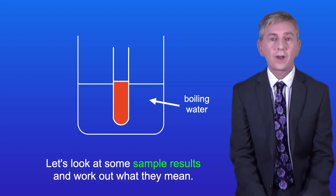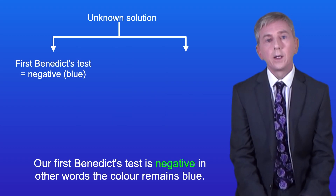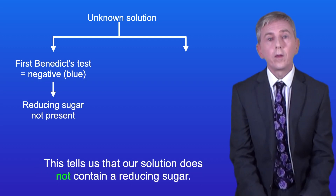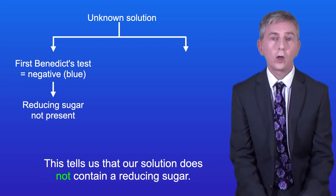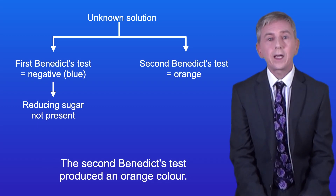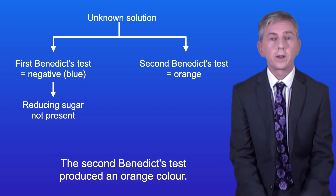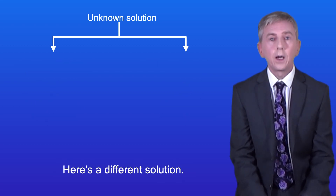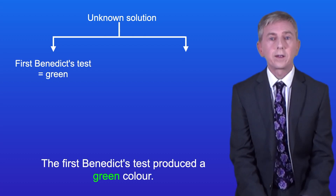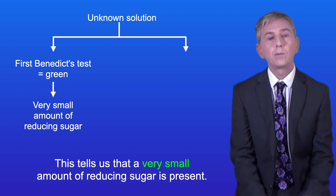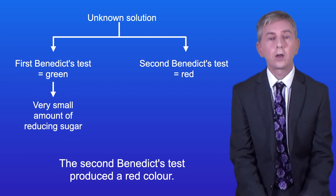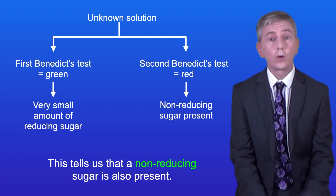Let's look at some sample results. If the first Benedict's test is negative (colour remains blue), the solution contains no reducing sugar. If the second Benedict's test produces an orange colour, the solution contains a non-reducing sugar. For a different solution, if the first Benedict's test produces a green colour, a very small amount of reducing sugar is present. If the second Benedict's test then produces a red colour, a non-reducing sugar is also present.